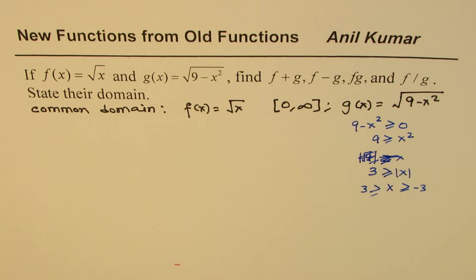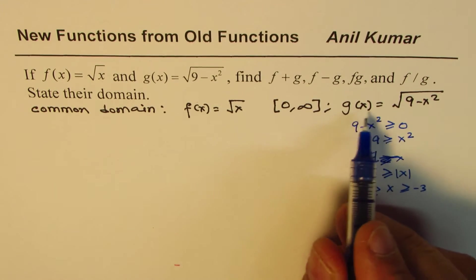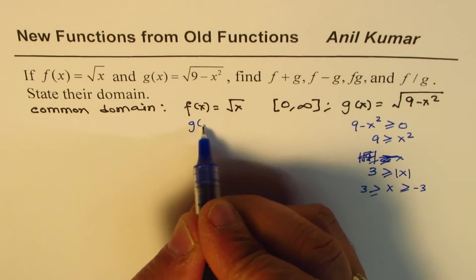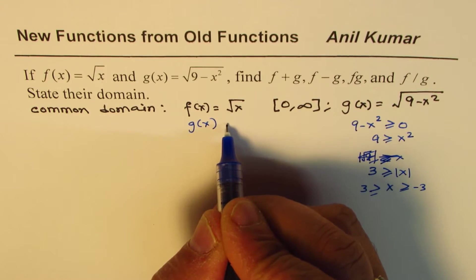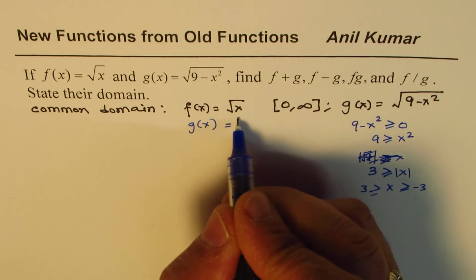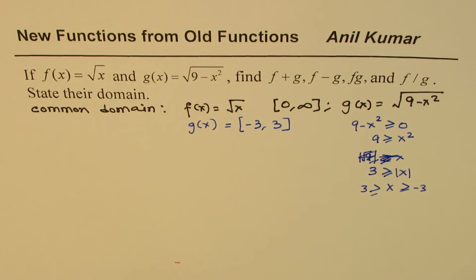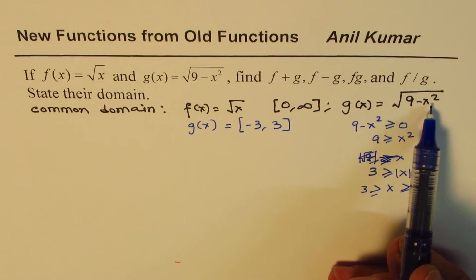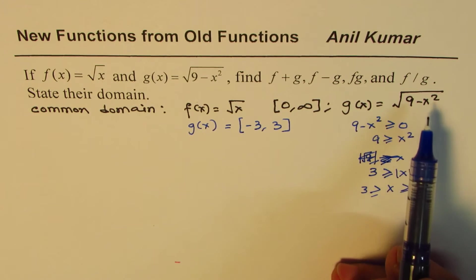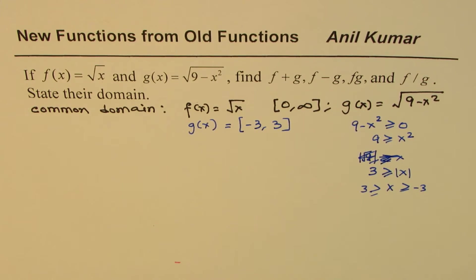That is how you could get domain of g(x). So domain of g(x) equals minus 3 to plus 3. It is a semicircle with radius of 3 units.